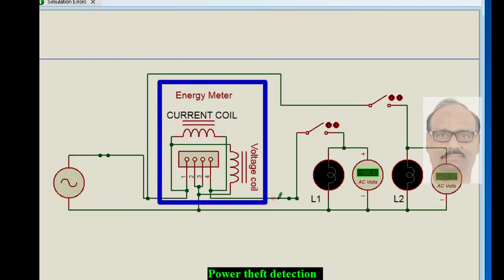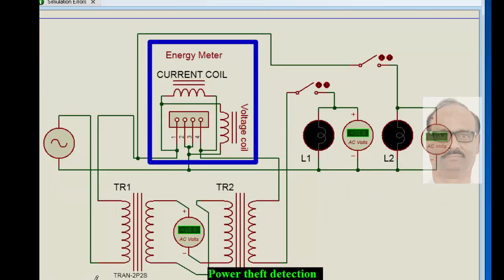We have a switch for supply to be drawn through the energy meter, and we have one more lamp load which is drawn before the meter. We will see how it behaves while we are trying to detect the power theft. Now we have connected the transformers for detecting power theft.